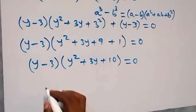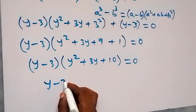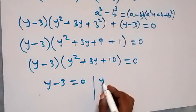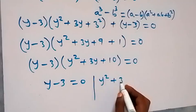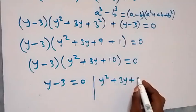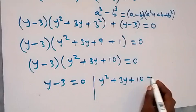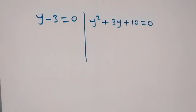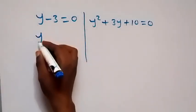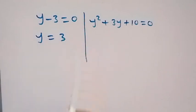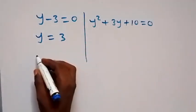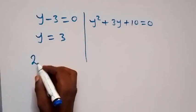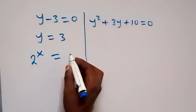Here we have two cases: y minus 3 equals to 0, or y squared plus 3y plus 10 equals to 0. From the first case, y equals to 3. We recall that we represented y as 2 raised to power x, so we have 2 raised to power x equals to 3.